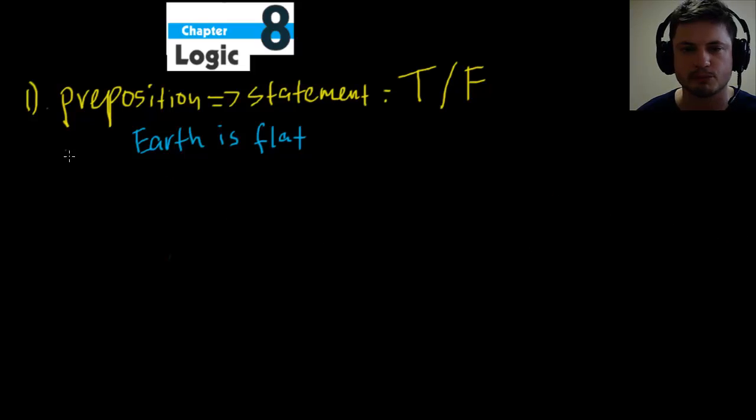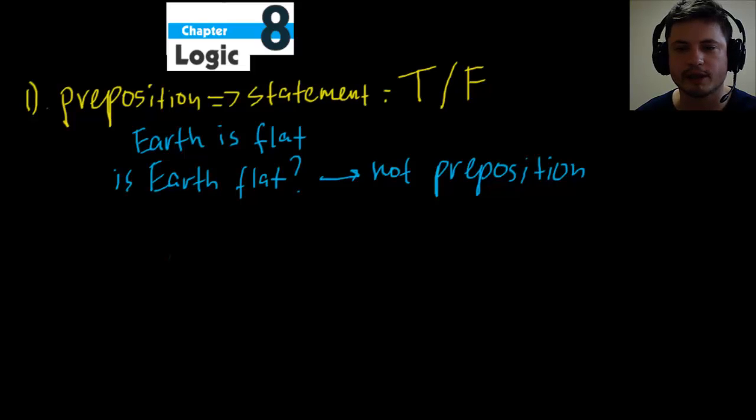But what is not a proposition? This is actually a more important question. Not a proposition would be things like a question. So is Earth flat? Well, maybe. So if the answer is maybe, if it's a question, it is not a proposition. You cannot use this in logic. And the other example of not a proposition would be an opinion. So if you say things like, I think Earth is flat. Now that's an opinion. Maybe you're right, maybe not. But we cannot use this as a proposition and we cannot use logic to try to justify it.